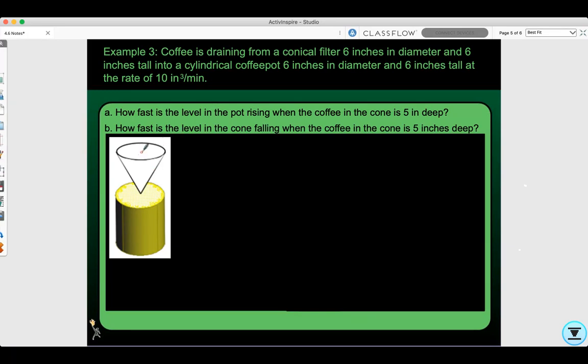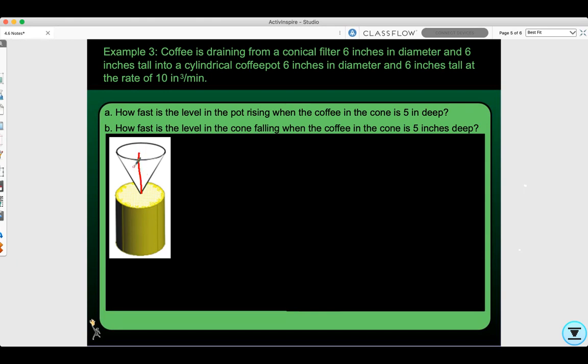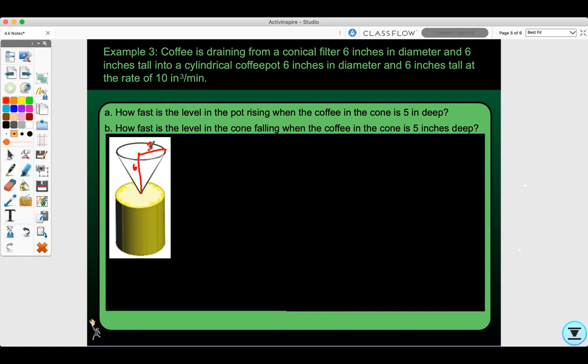Let's look at the picture and add information to it. The cone has a height of 6 inches and radius of 3. The cylinder also has radius 3 and height 6. Let's look at part A.